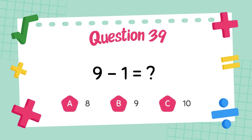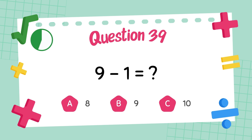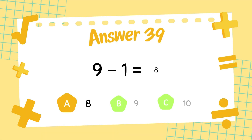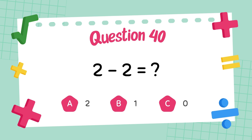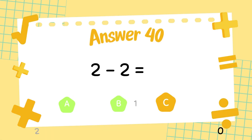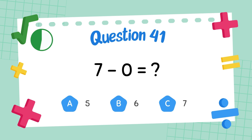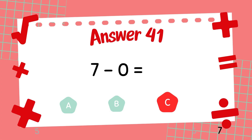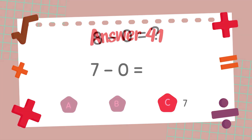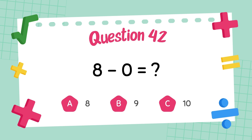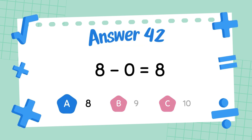What is 9 minus 1? The answer is 8. What is 2 minus 2? The answer is 0. What is 7 minus 0? The answer is 7. What is 8 minus 0? The answer is 8.